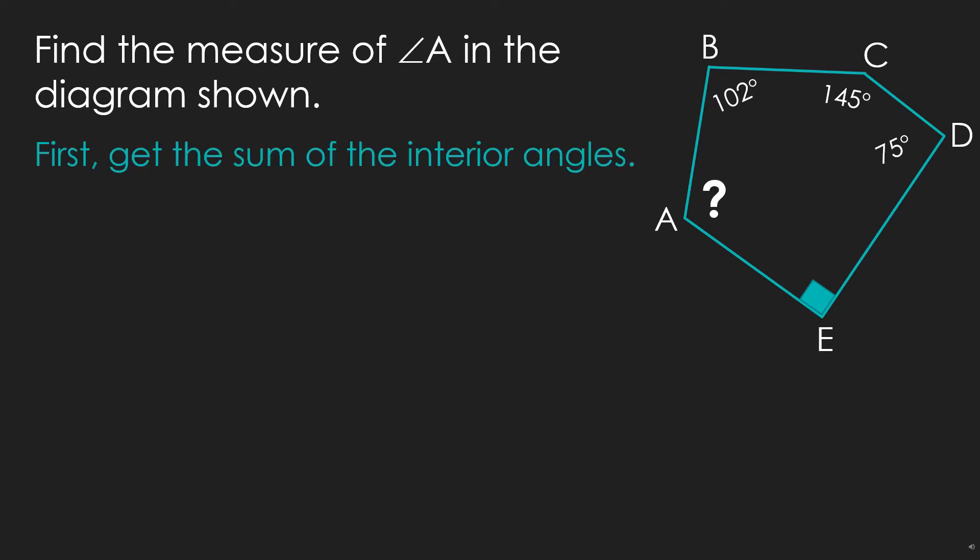The first thing we need to do is to get the sum of the interior angles. So using the formula (n - 2) × 180, we replace n with 5 since pentagon has 5 sides. And so we have (5 - 2) × 180, which then equals to 3 × 180, and which is equals to 540. So the sum of the interior angles of this figure is 540.